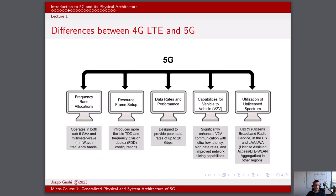Let's now look into 5G. 5G operates in both sub-6 GHz and millimeter-wave frequency bands. Sub-6 GHz bands include frequencies below 6 GHz, such as 600 MHz, 3.5 GHz, and 4.5 GHz, which provide better coverage and penetrate buildings. Millimeter-wave bands, which range from 24 GHz to 40 GHz and higher, offer extremely high data rates but have shorter range and are more susceptible to obstructions. In terms of the resource frame, 5G introduces more flexible TDD and FDD configurations, allowing the network to dynamically adjust uplink and downlink allocations based on traffic demand and channel conditions, leading to improved spectral efficiency.